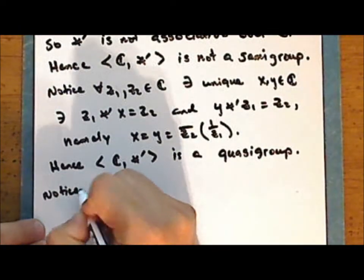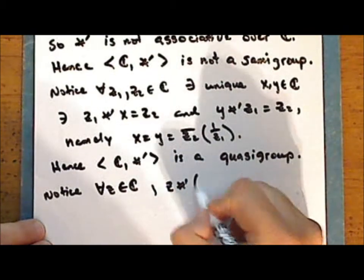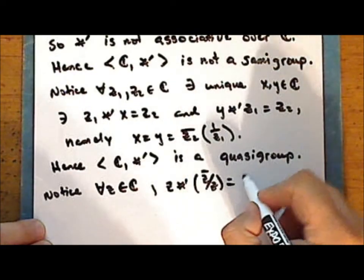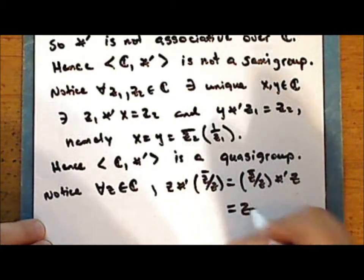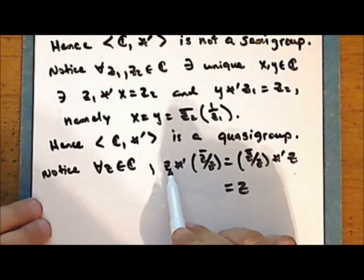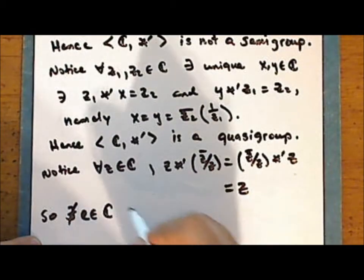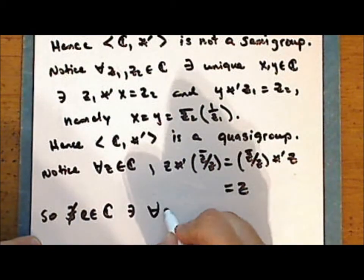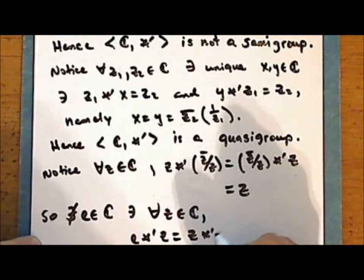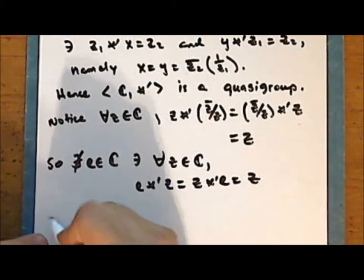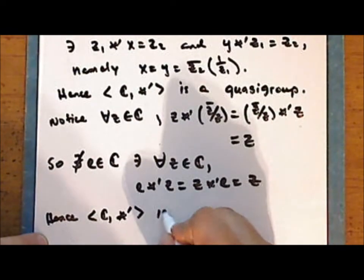Also notice that for every complex number z, z star-prime the conjugate of z over z is the same as the conjugate of z over z star-prime z, which gives z. However, this number depends upon the given complex number z, and so there does not exist a complex number e such that for every complex number z we have that e star-prime z equals z star-prime e, which gives z. Hence the complex numbers with binary operation star-prime is not a loop.